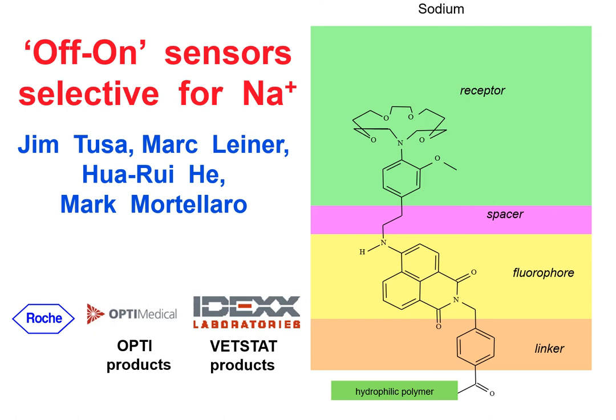These are off-to-on sensors for sodium ions. The picture on the right divided into green, red, and yellow boxes shows what we discussed for fluorescent PET sensors. There's a receptor, spacer, and fluorophore. You can see the actual molecular structures involved. This green receptor was well known to catch sodium ions in water, so it was suitable for this sensor. The team shown in blue are all from Roche.